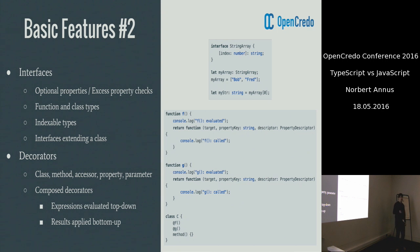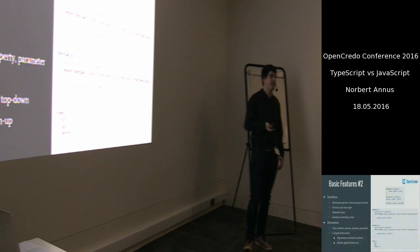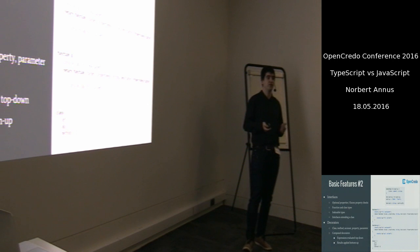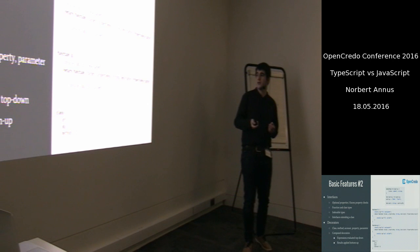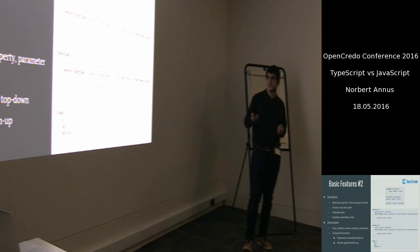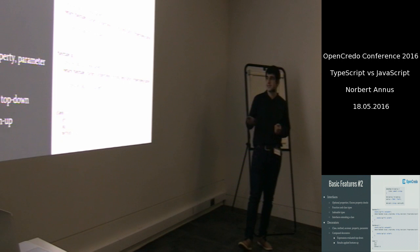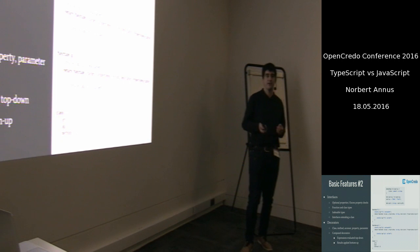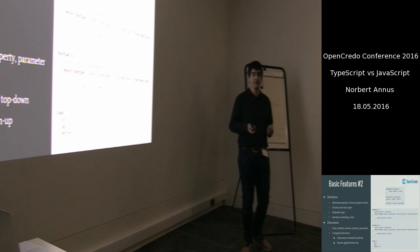I mentioned decorators earlier. You can think of decorators as an interface to build up something like a Java-like annotation. You can attach decorators to various things like classes, methods, accessors, properties, or even parameters, and you can create even composition from these decorators.